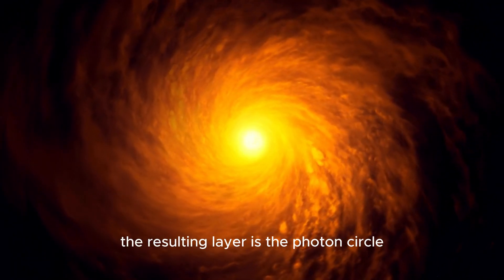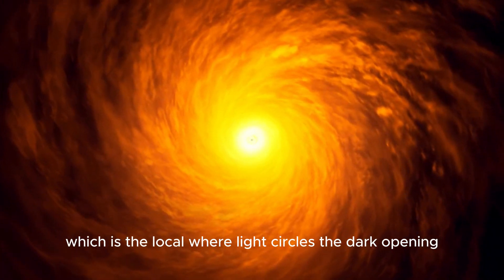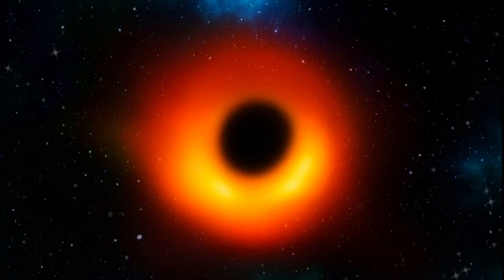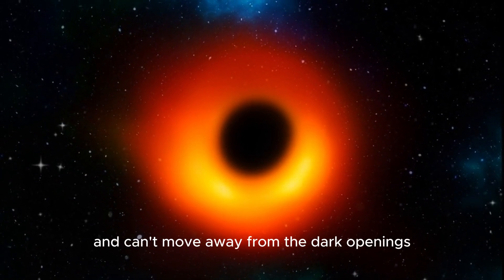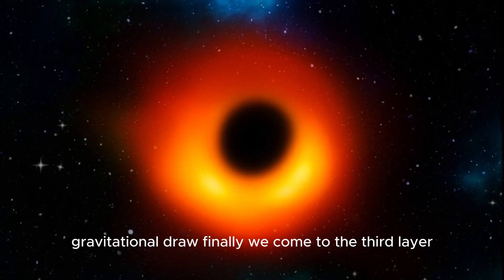The resulting layer is the photon circle, which is the local where light circles the dark opening. Any light that enters this local will be gotten and can't move away from the dark opening's gravitational draw.